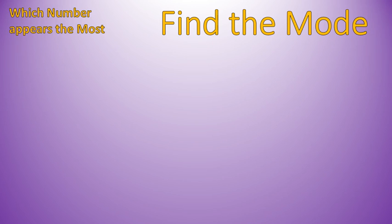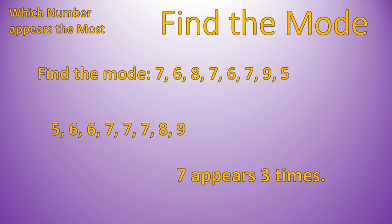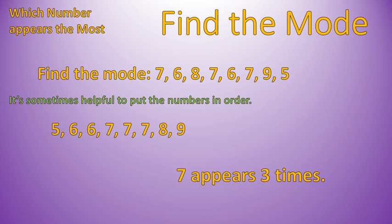Now I'm going to do one quick example of finding the mode. The list is: 7, 6, 8, 7, 6, 7, 9, 5. Here's one trick I'm going to do — I'll put the numbers in order from least to greatest. I don't have to do that to find the mode, but it makes it easier because now I can clearly see there are two 6s, three 7s, one 5, one 8, one 9. So I know that 7 appears three times. The mode is 7.